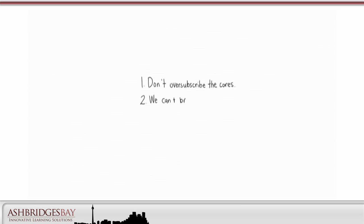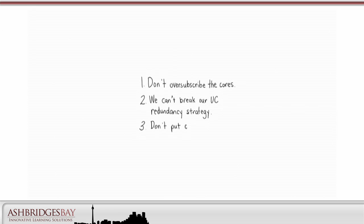Number 2: we can't break our UC redundancy strategy. Putting CUCM1A and CUCM1B on the same server would be a bad idea. And number 3: don't put all the publishers on the same server. Mix publishers and subscribers.